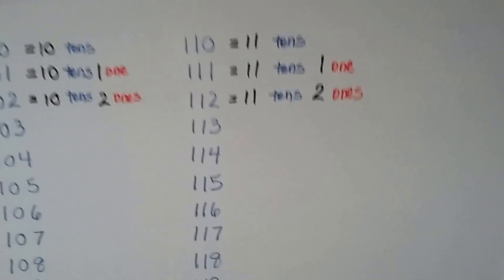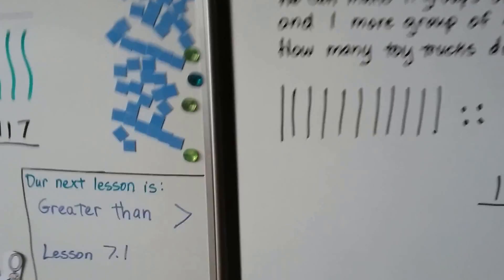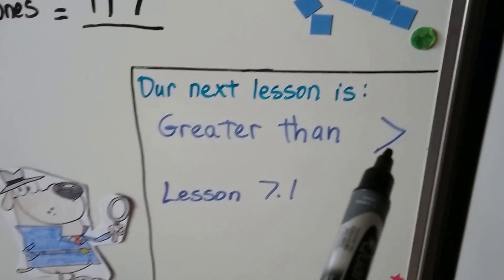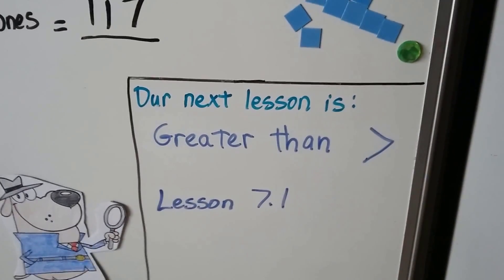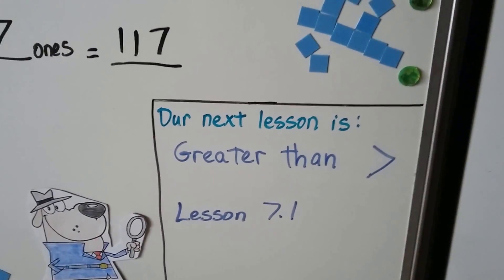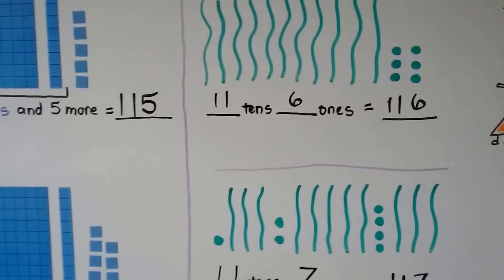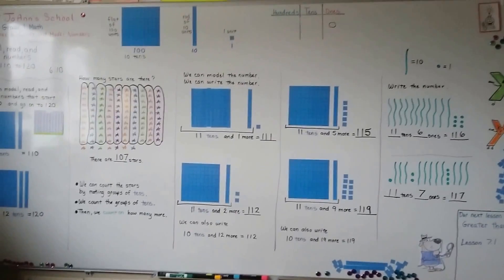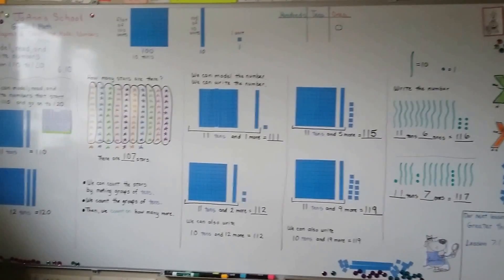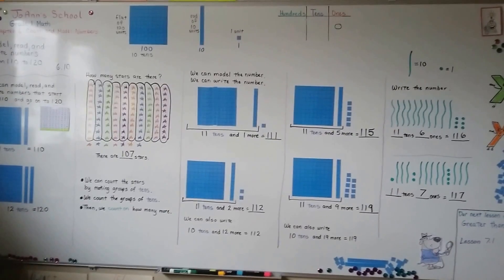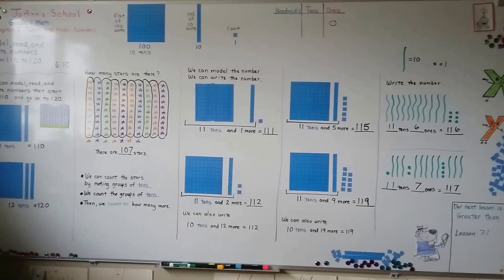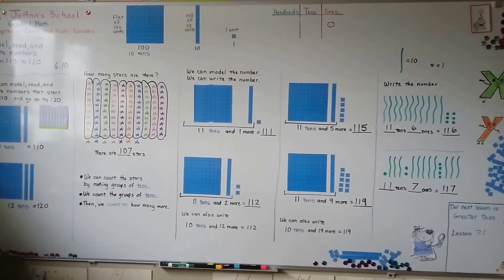So can you count by 10s? Our next lesson is going to be about greater than — that's this symbol. Kind of looks like a mouth, doesn't it? We'll talk about that. That's lesson 7.1. So practice counting by 10s. See how high you can go. You can bounce a ball back and forth with a friend or a brother or sister, counting by 10s and taking turns. You could jump rope and count by 10s. I hope you have a great day. I hope you're doing well and I'll see you next time. Bye.